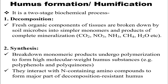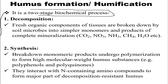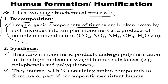Humification is a two-stage biochemical process. The first stage is decomposition, where fresh organic components of tissues are broken down by soil microbes into simpler monomers and products of complete mineralization. Essentially, complex compounds are broken down into simpler monomers and further processed.